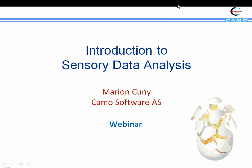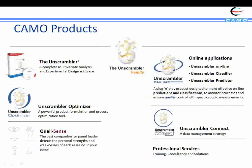The topic of today is Sensory Data Analysis. We are going to work with two different software: the Unscrambler, which is a complete multivariate analysis and experimental design software, and Quadescence, which is a software designed to check the results of panelists.